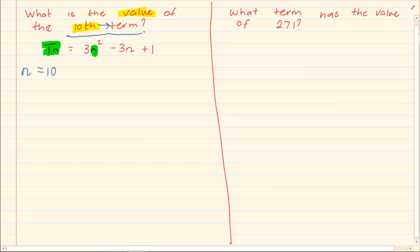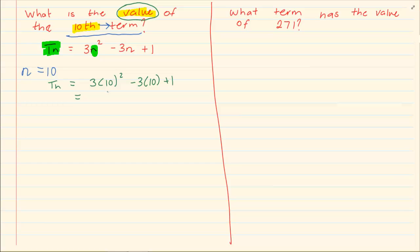So it's the first, second, third till the tenth term. What they are asking you is how much is the tenth term equal to? So we are going to substitute in n 10. And our final answer is 271. So the value of the tenth term is 271.